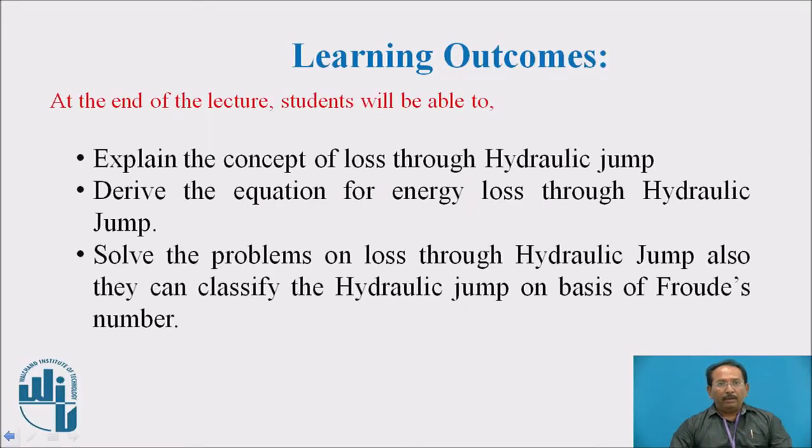At the end of this topic you are able to explain what is the concept of loss of energy through hydraulic jump, derive the equation of energy loss through the hydraulic jump, and solve the problems on loss through hydraulic jump and also classify the hydraulic jump on the basis of Froude's number. Here Froude's number is very important as the gravitational force is predominant than the other forces that is viscous, then pressure, elastic and surface tension. Particularly in this hydraulic jump phenomenon this gravitational force is predominant and that is why the Froude's number is taken into account.